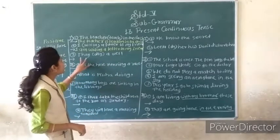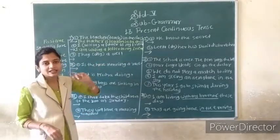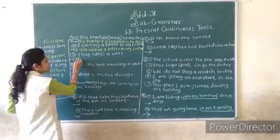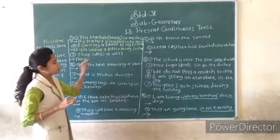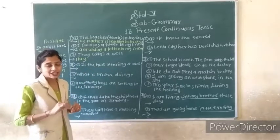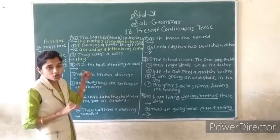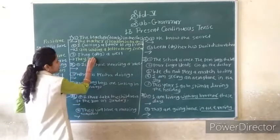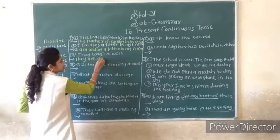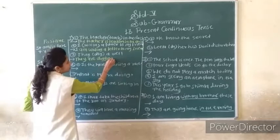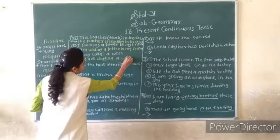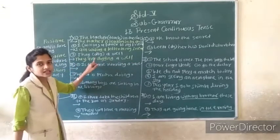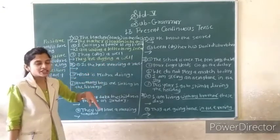Third one: They dig a well. Subject is 'they', which is plural, so you use 'are'. They are digging a well. You understand? They dig a well becomes: They are digging a well. Like this you can solve.